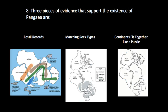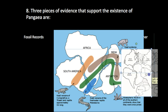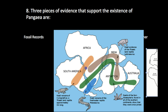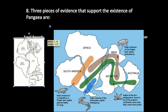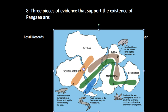We know that Pangaea exists because of, first, fossil records. These fossil records can show that when the continents were connected, there were animals that lived on the same continent that then separated. So they weren't swimming across the ocean we have today — they were living in both places, and then the land started to drift apart. The most helpful fossils, actually, are plants, because we know plants didn't swim across.